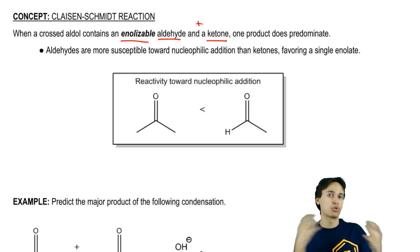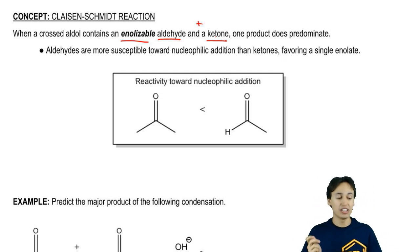Remember that I told you guys if you have a crossed aldol, then you should have one non-enolizable carbonyl. But this is the reaction that happens when you have specifically an enolizable aldehyde and an enolizable ketone, both together.